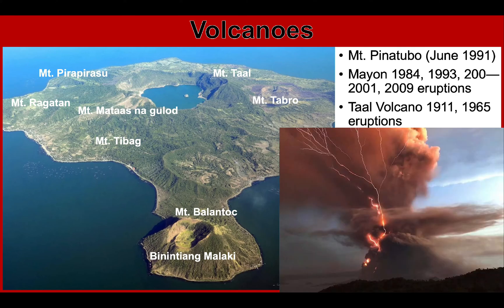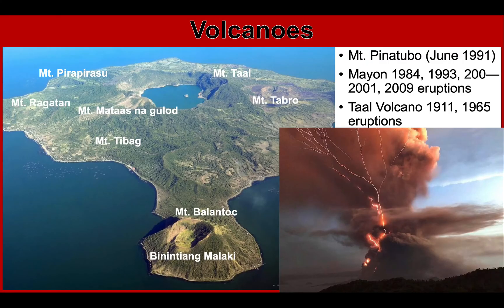This figure shows a lightning strike as Taal Volcano spews columns of ash as seen from Tagaytay City. So, what are the negative impacts of an eruption? We have destruction of properties, deaths and injuries, and displacement of people. Those are the things that we're going to study.